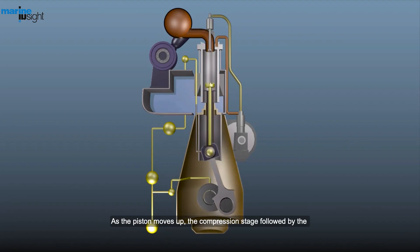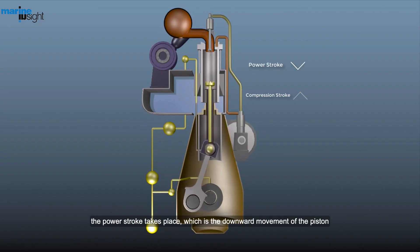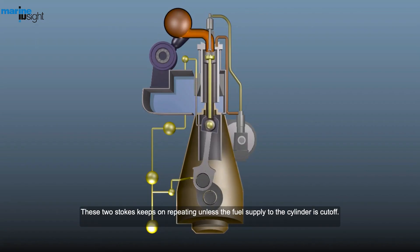As the piston moves up, the compression stage followed by the power stroke takes place, which is the downward movement of the piston. These two strokes keep repeating unless the fuel supply to the cylinder is cut off.